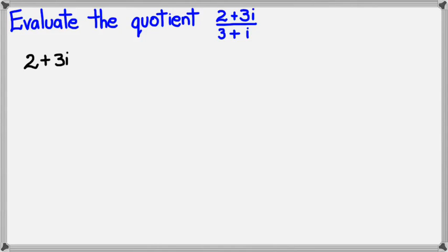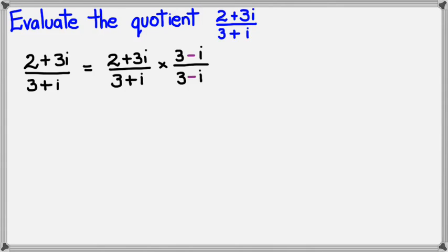So in this case, 2 plus 3i divided by 3 plus i. I've got to multiply by the conjugate of the denominator. The conjugate of the denominator is 3 minus i. Whatever I've got to multiply in the denominator, I've also got to multiply in the numerator. So it will be 3 minus i again.